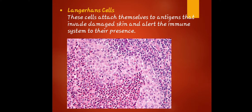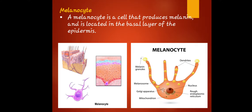Langerhans cells attach themselves to antigens that invade damaged skin and alert the immune system. They are a unique population of tissue-resident macrophages that form a network of cells across the epidermis. Langerhans cells are located in the skin barrier and play a key role as immune sentinels by determining the appropriate adaptive immune response when encountering foreign substances.